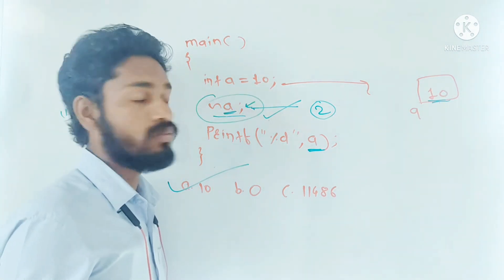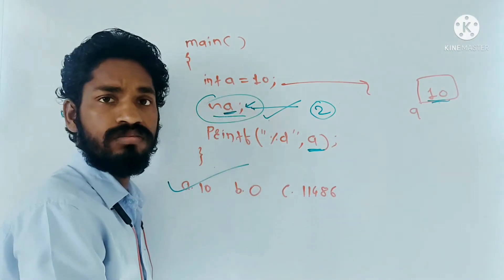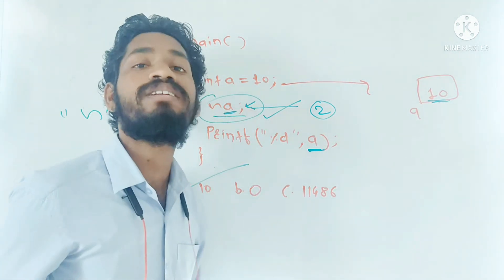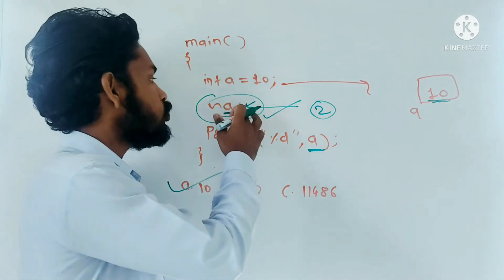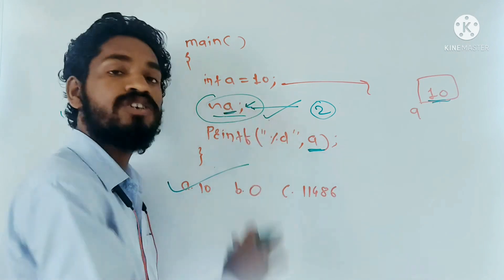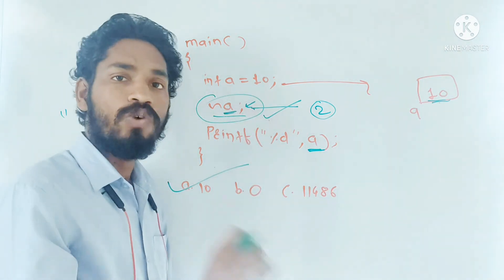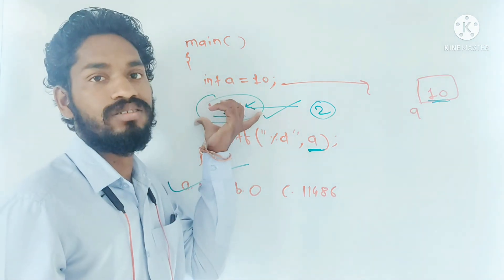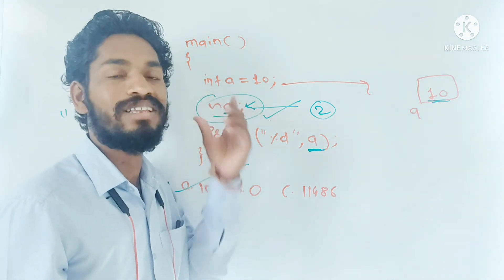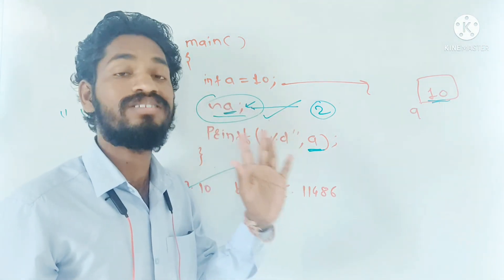In your mind you will get one question: then what is the use of this expression? There is no use of this expression. It is not affecting anything. Because of this expression, there is no impact on this code. To confuse the student, to filter out the student, they have given such type of expressions in the program. That's it. There is no other motive. Please keep in your mind.